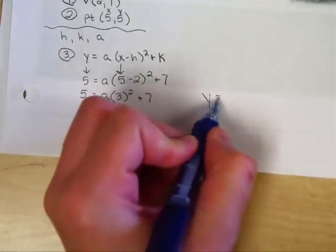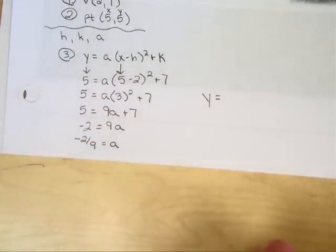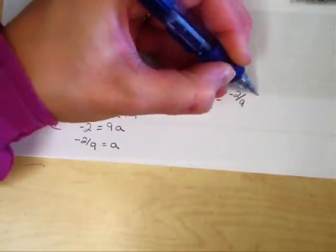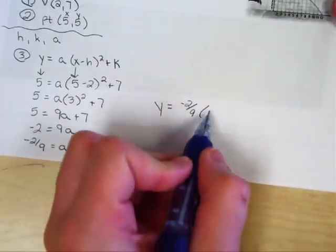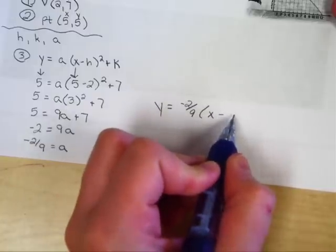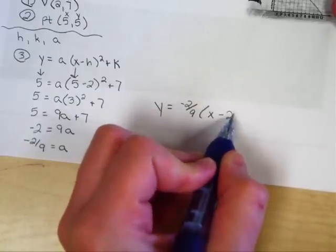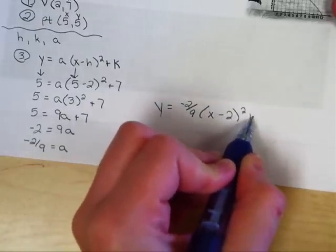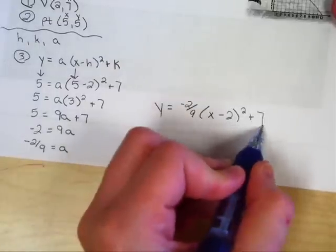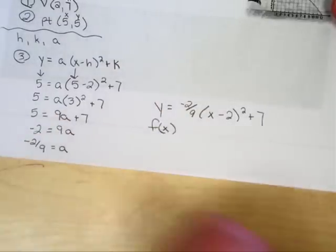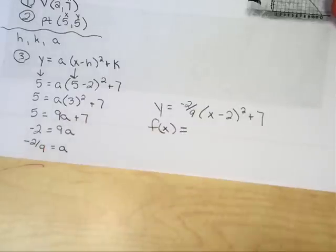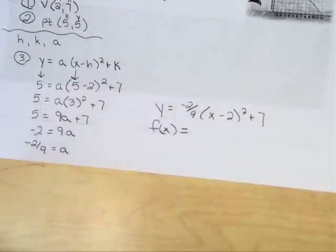y equals, fill in a, -2/9, times the quantity, and we're putting this in vertex form. x minus h, so x minus h was 2, quantity squared, plus k, k was 7. If you want to be real fancy, you can write it in function notation, and write f(x) equals. Not necessary, but it is in function notation. Thank you.